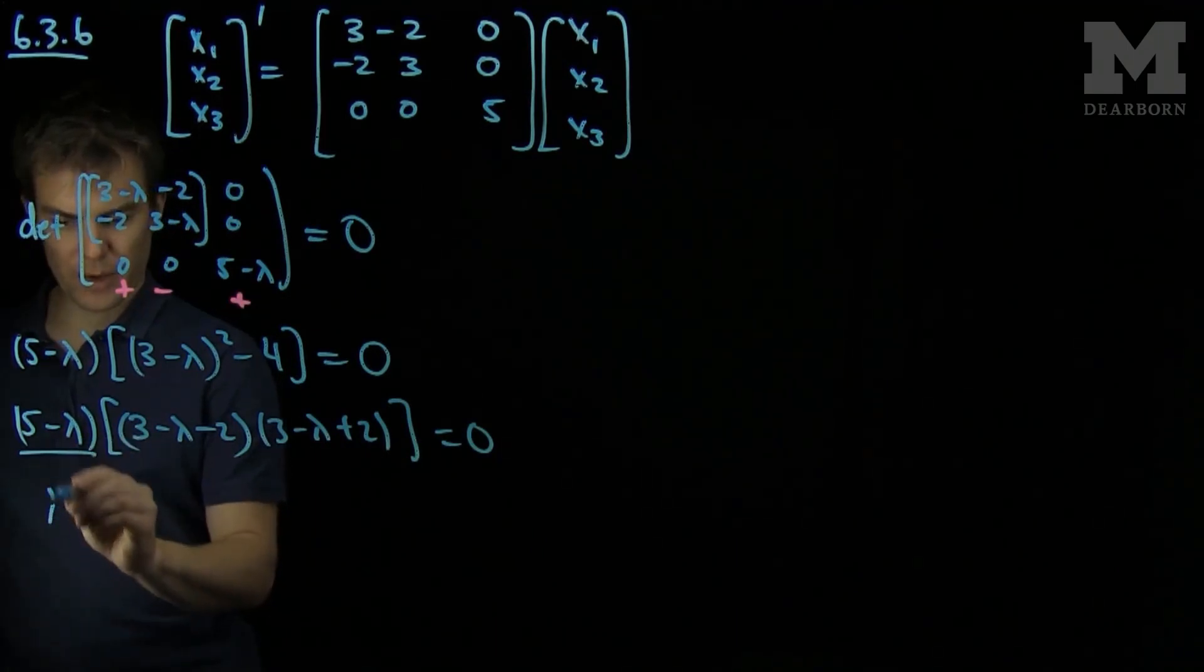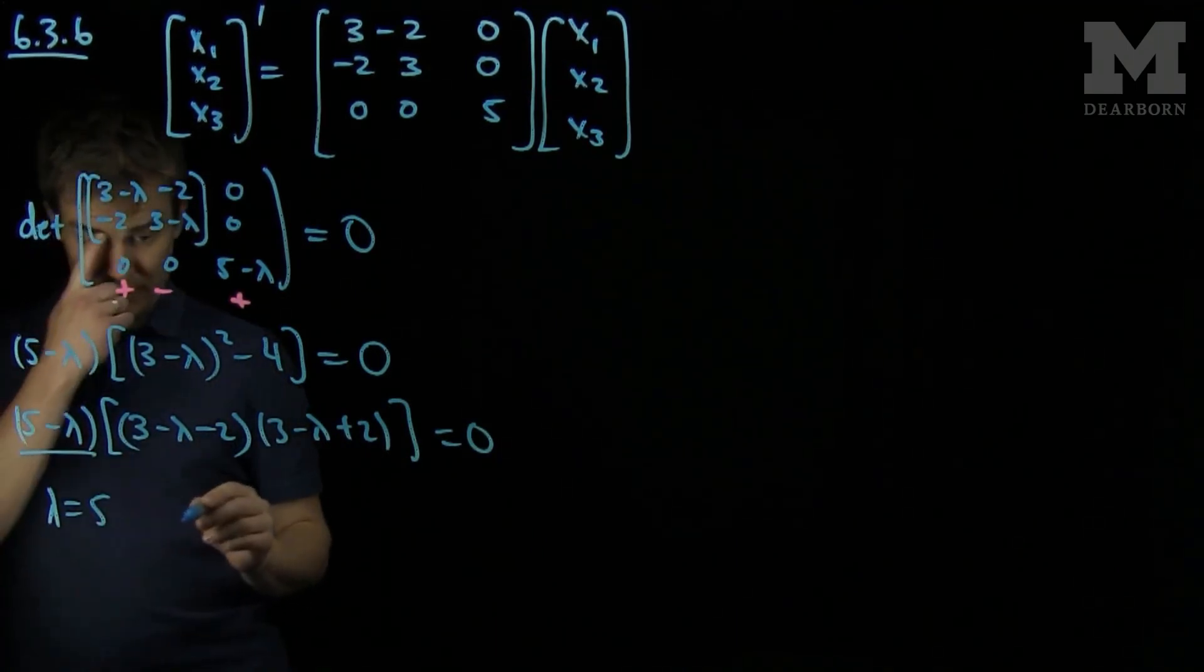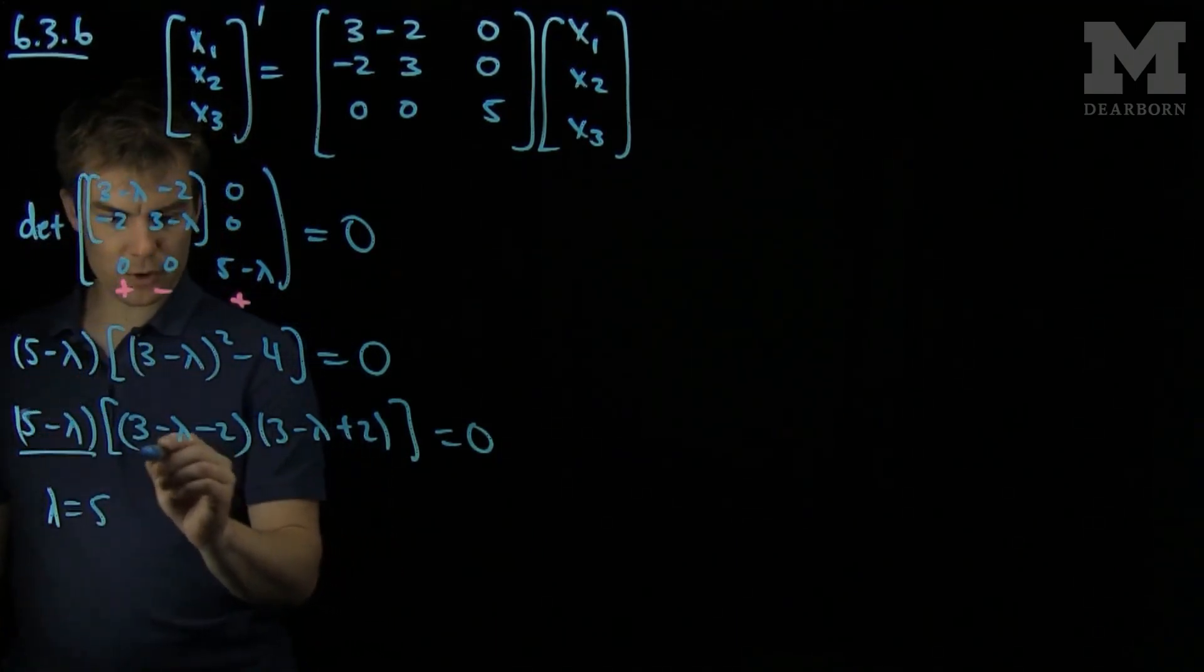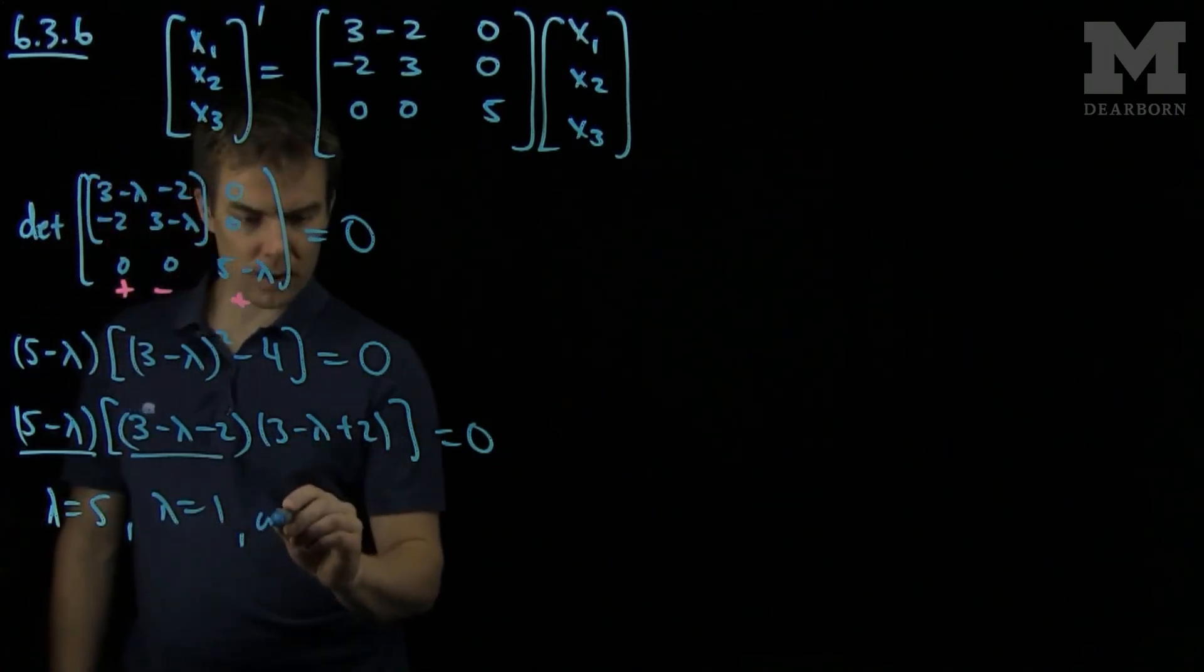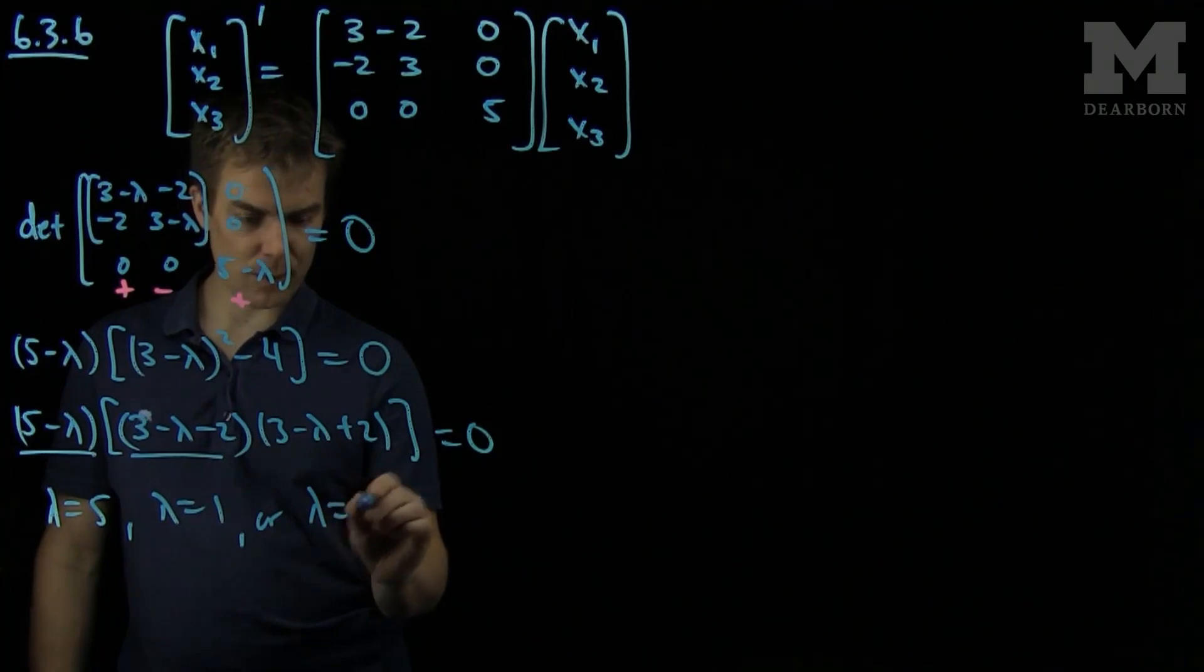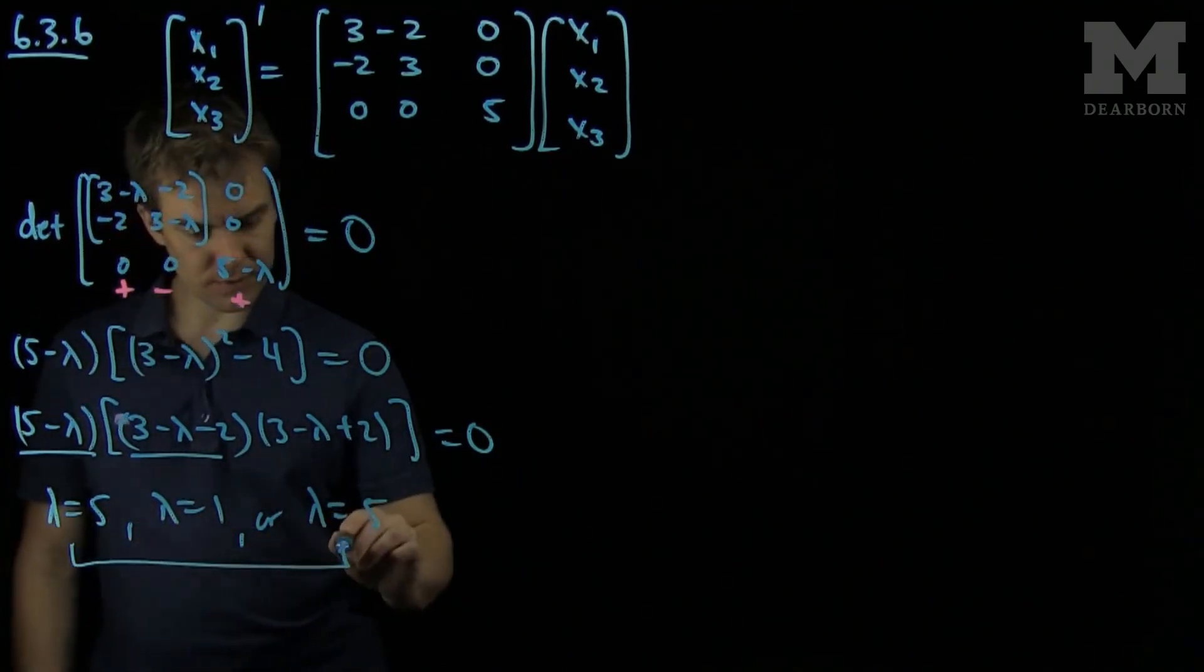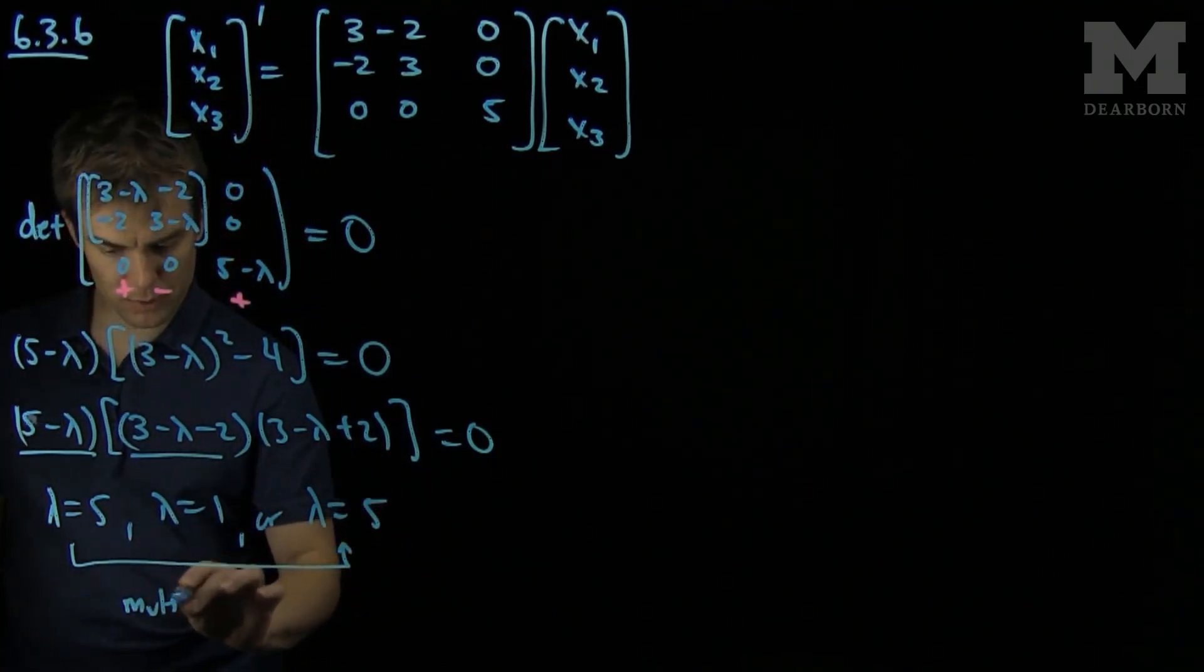From this we can find the roots. We have that λ = 5 from this expression, λ = 1 from this expression, or we also get that λ = 5. So λ = 5 is an eigenvalue with multiplicity 2.